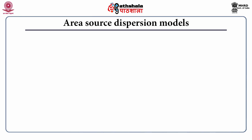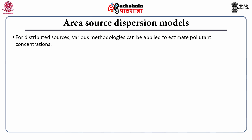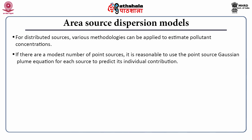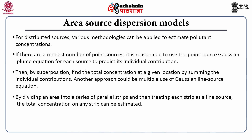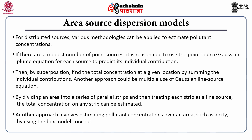Let us move to the area source dispersion model. For distributed sources, various techniques can be applied to estimate pollutant concentration. If there are a modest number of point sources, it is reasonable to use the point source Gaussian plume equation for each source to predict its individual contribution. Then by superposition, find the total concentration at a given location by summing the individual contributions. Another approach is multiple use of the Gaussian line source equation by dividing an area into a series of parallel strips and treating each strip as a line source.